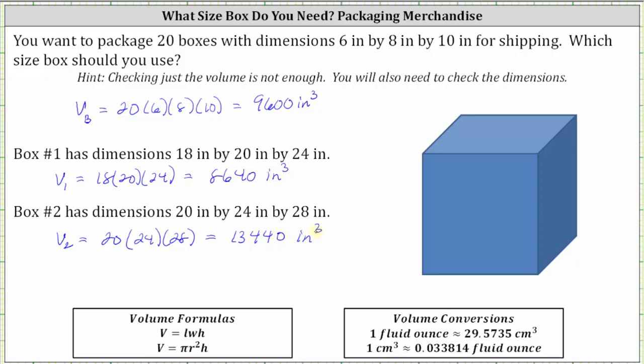By the way, we can see the volume of box one is less than the volume of the 20 smaller boxes, and therefore box one is too small. Let's go ahead and label box one a no.